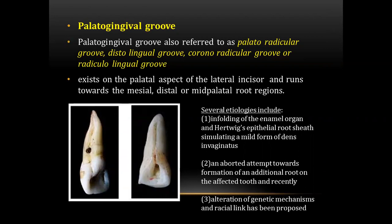The etiologies are infolding of enamel organs and HERS, stimulating a mild form of dens invaginatus. The second is an aborted attempt towards the formation of an additional root on the affected tooth, and recently an alteration of genetic mechanism and racial link has been proposed. The question asked about the palatal gingival group.